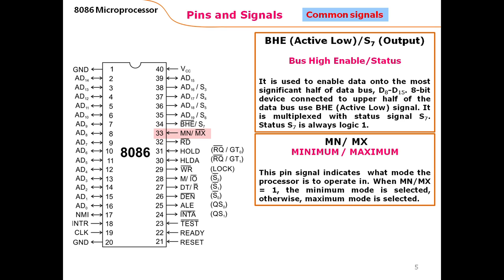Pin 33 of the 8086 microprocessor is the MN/MX pin, which is very important — it is used to select either the minimum mode or the maximum mode of operation. When this pin receives a logic one, the minimum mode is selected; when it receives a zero, the maximum mode is selected. MX with an overbar means that whenever zero is received, the maximum mode of the microprocessor is selected.